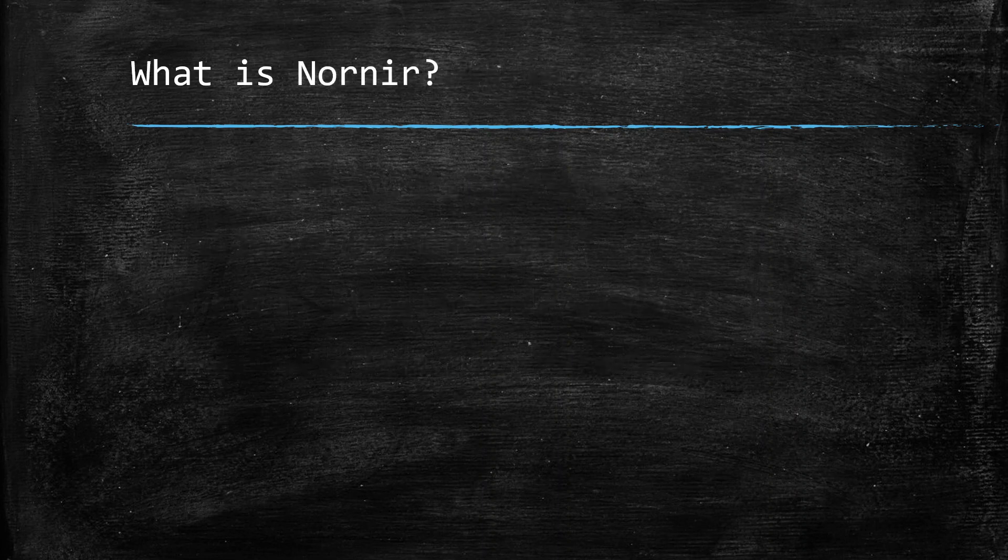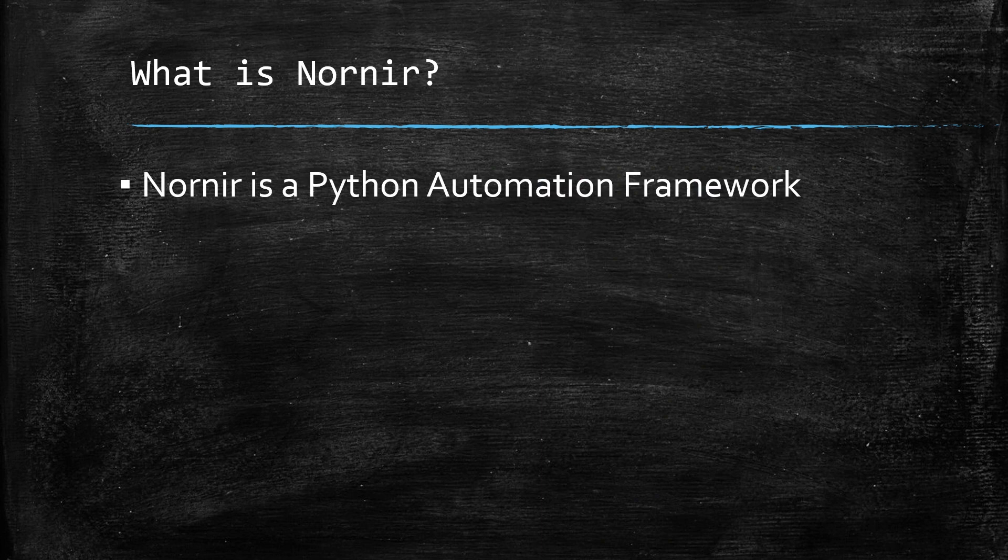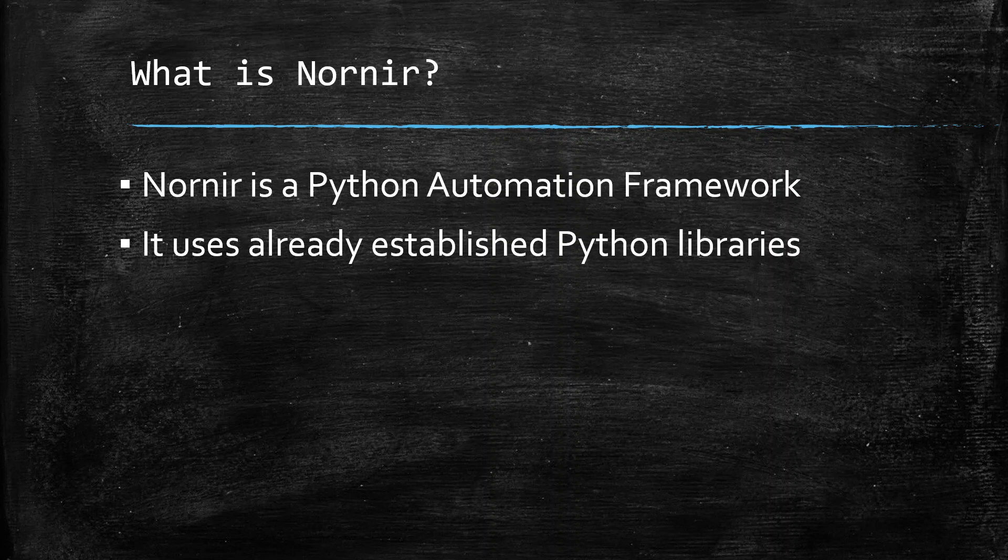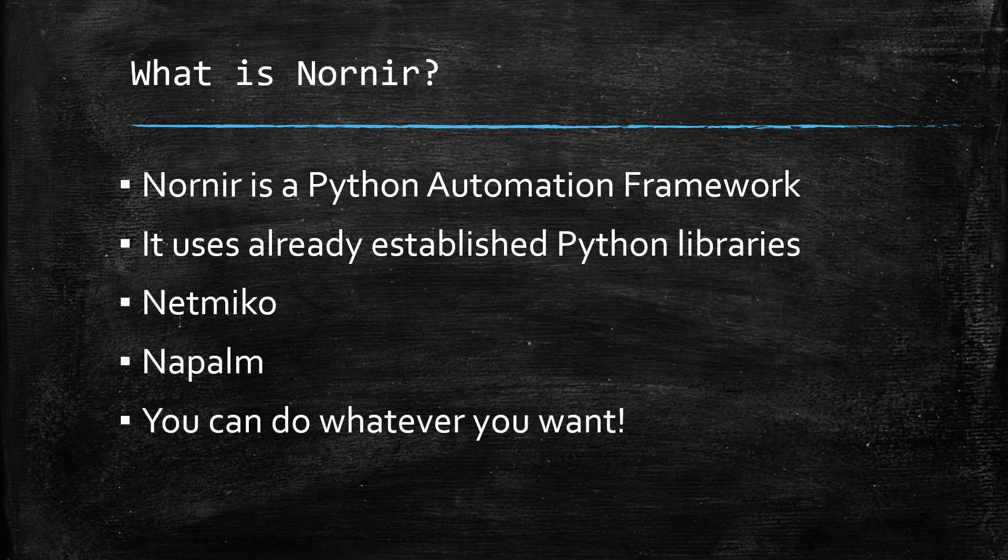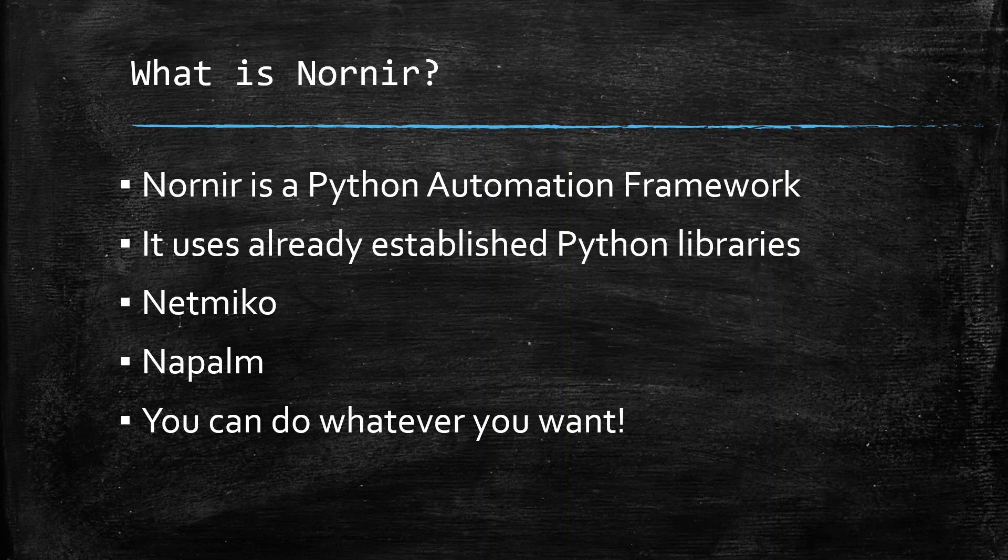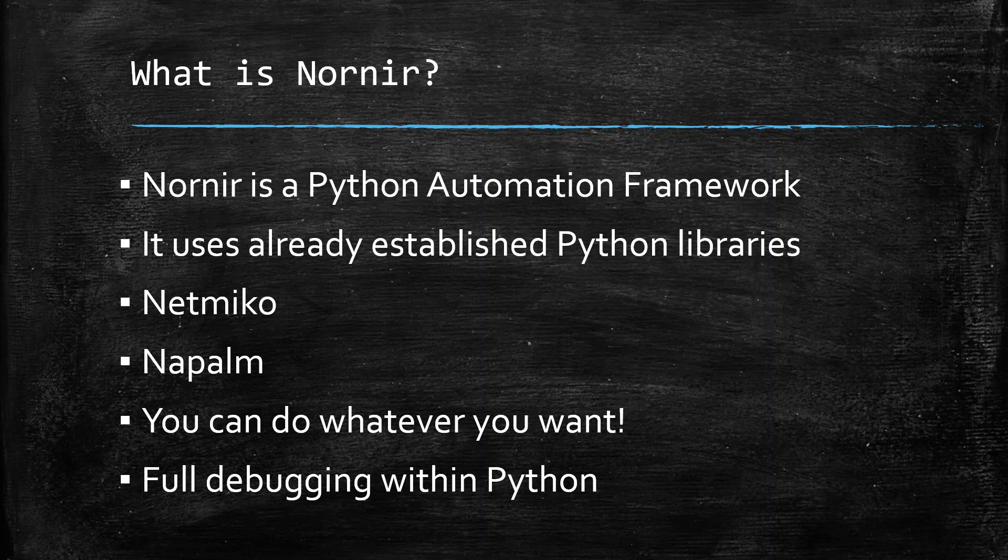So if you don't know what Nornir is, Nornir is a Python automation framework, and it already uses the already established Python libraries, mainly Netmiko and NAPALM. Netmiko is used to provide the SSH connection into the network devices, and NAPALM is used to abstract the configurations between different vendors. And as it's written in Python, you can actually do whatever you want. So if you know how to do it in Python, you can do it in Nornir, and you of course get the full debugging within Python with everything you've written.